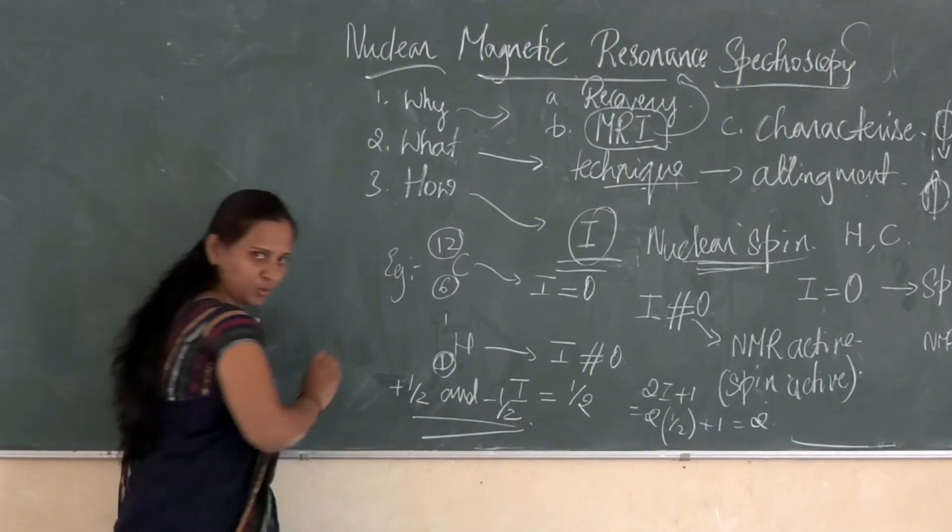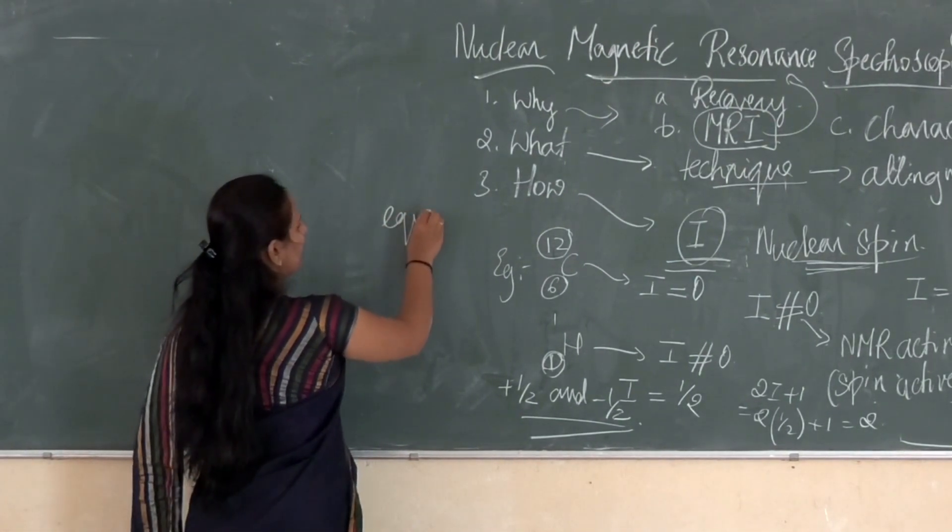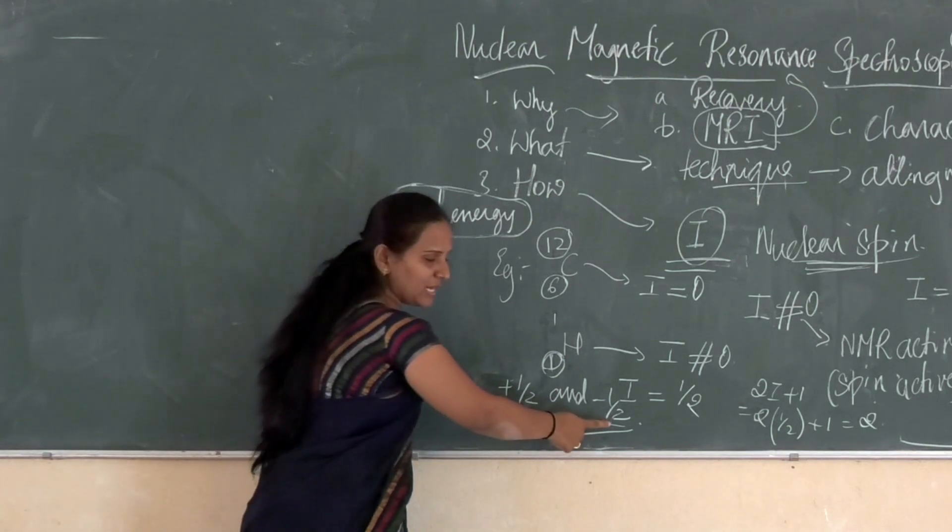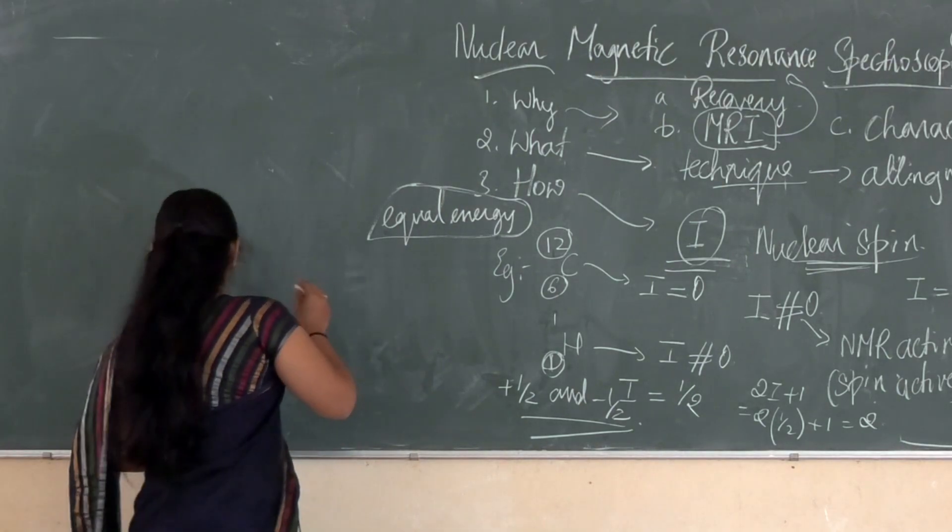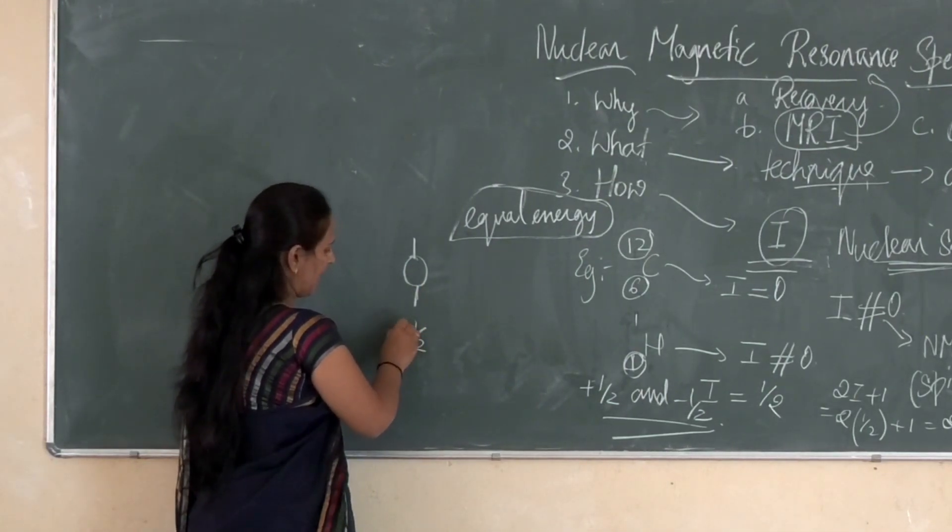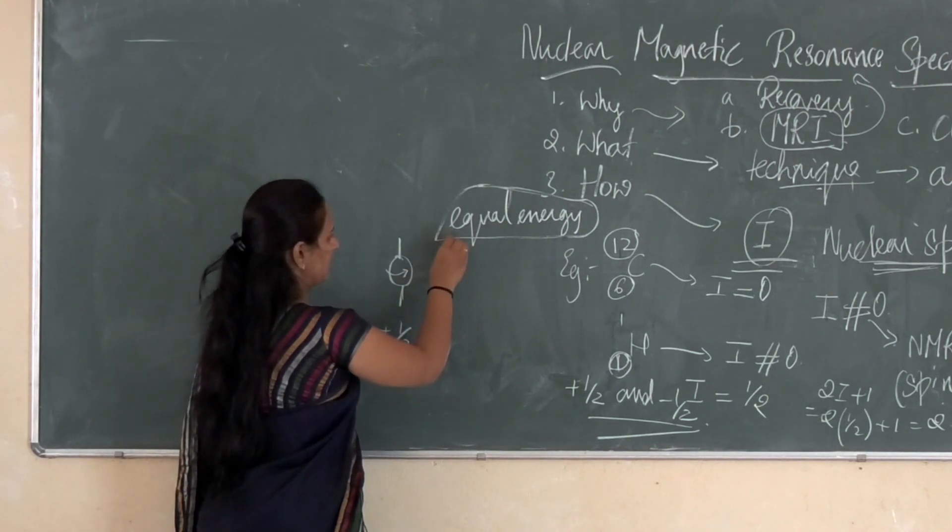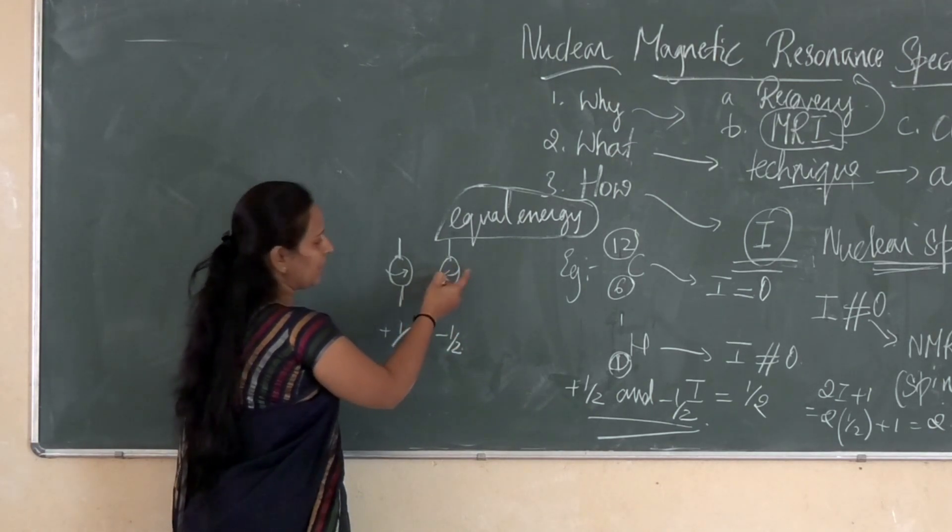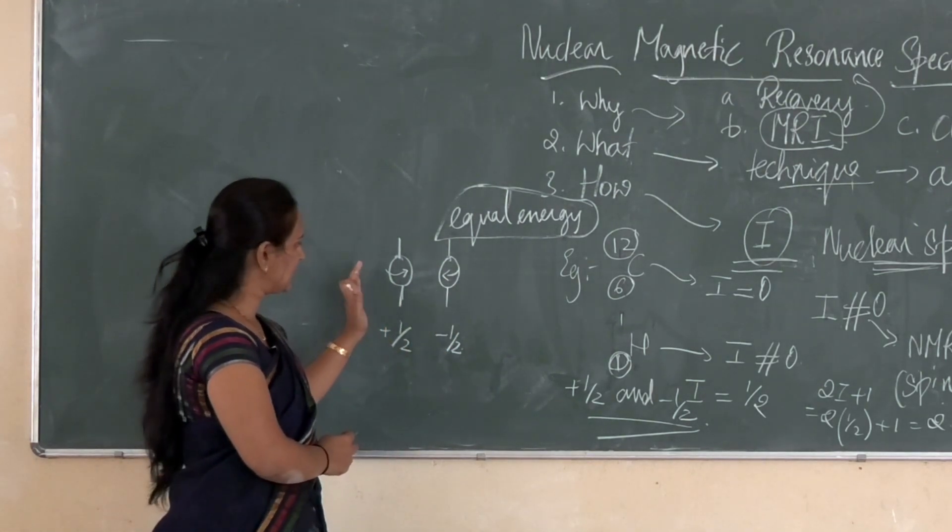These spin nuclei in the absence of the external magnetic field will be having equal energy. This is very important. The spin nuclei in the absence of the external magnetic field will be of equal energy. If I write one of the nuclei like this, if this is plus half, this will be spinning in clockwise direction. And if I take one more spin state that is minus half, the spin state will be in anticlockwise direction.